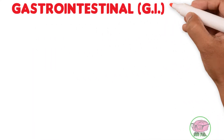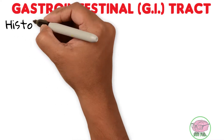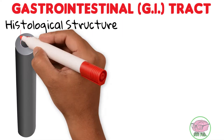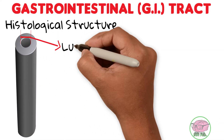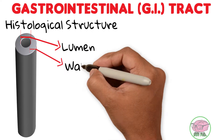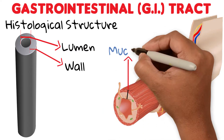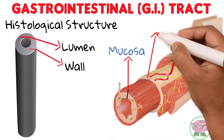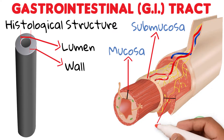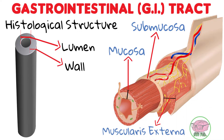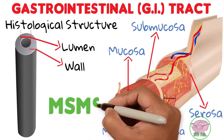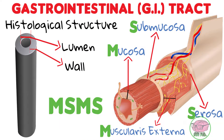The gastrointestinal tract that includes the esophagus has a characteristic histological structure. It's a tube with a lumen of different diameters and a wall that is made up of four different layers: mucosa, submucosa, muscularis externa, and serosa. You can use the simple mnemonic MSMS to remember these layers.